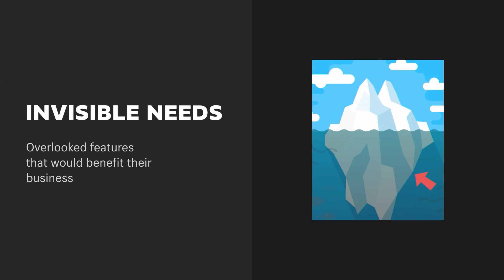Then we have the invisible needs. These are often things that clients really don't know they even wanted in their theme, but you're there to give them. Some really important things here are performance enhancements for the actual theme itself — things like responsive images, DNS prefetch, avoiding too many Liquid loops — all the stuff happening on the back end that the client isn't really thinking about, but that will deliver a better experience for their customers.